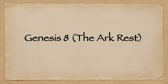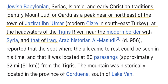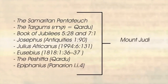Genesis chapter 8 covers the ark resting and everybody coming off the ark with all the animals. I believe the ark would have rested around the area of Mount Judy. This place is known in Jewish, Babylonian, Syriac, Islamic, and early Christian traditions as a peak near or northeast of the town of Jezret Ibn Abur, at the headwaters of the Tigris River near the modern border of Syria and Iraq. There are various mentions of Mount Judy in the Samaritan Pentateuch, Book of Jubilees, Josephus, Julius Africanus, and many others.